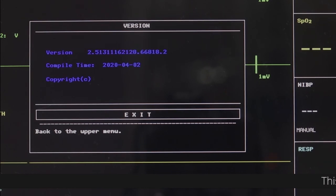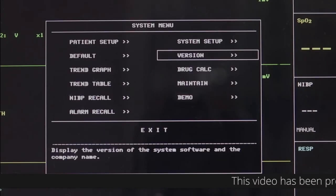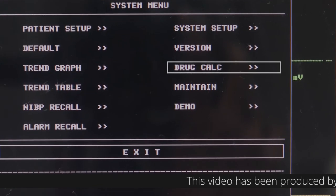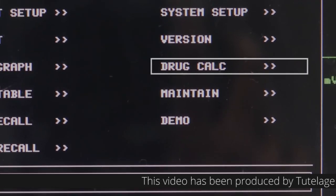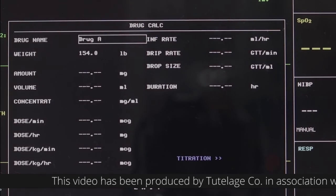Version tells you the software version of the monitor. Drug Calculation: You can use the Drug Calculation and Titration Table function of the monitor to calculate the concentration of 15 kinds of drugs.